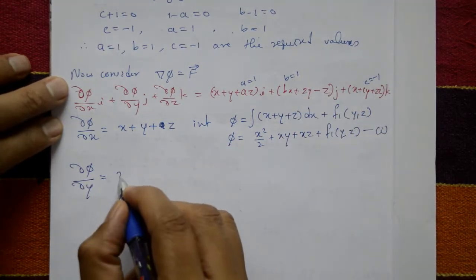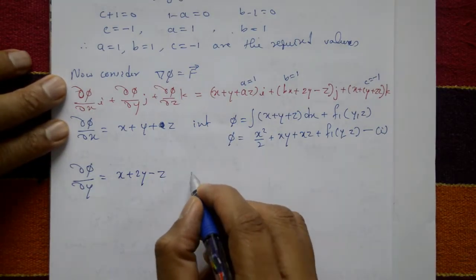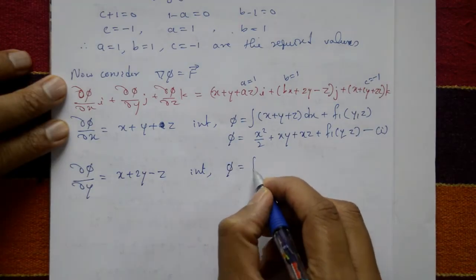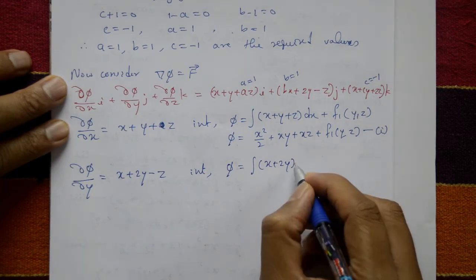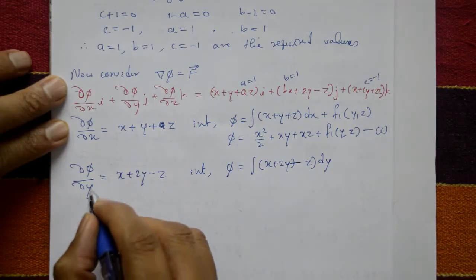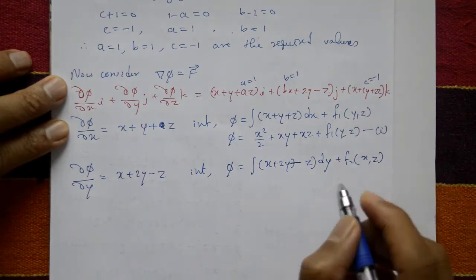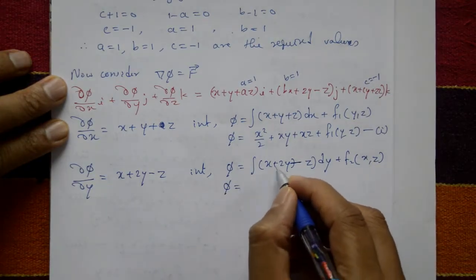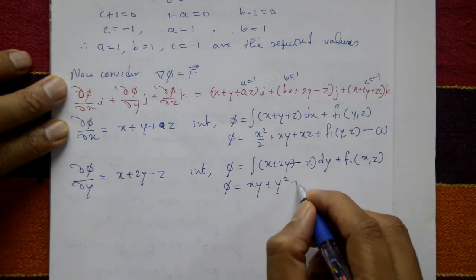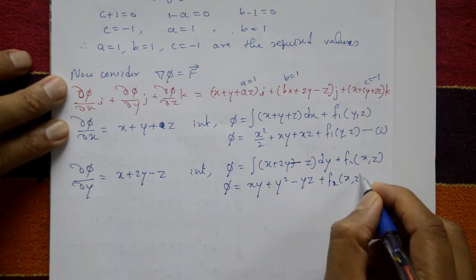Taking the coefficient of j: ∂φ/∂y = x + 2y - z. Integrating with respect to y gives φ = xy + y² - yz + f2(x, z), where f2(x, z) is an arbitrary function of x and z. This is equation number 2.